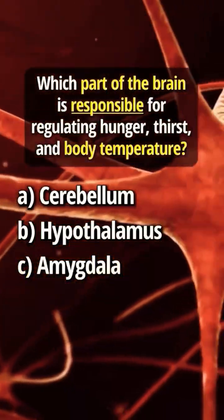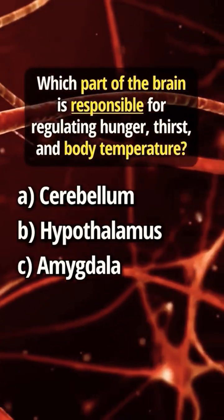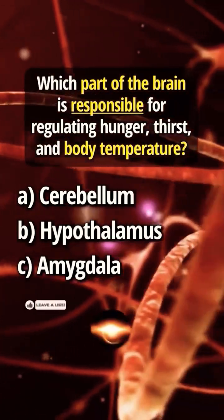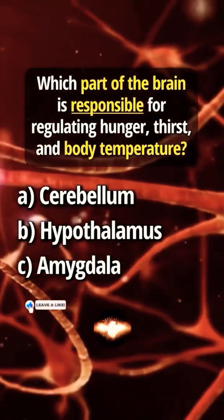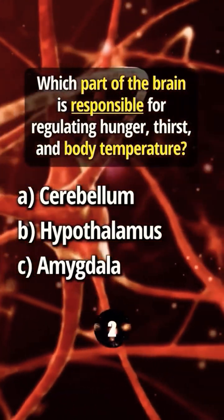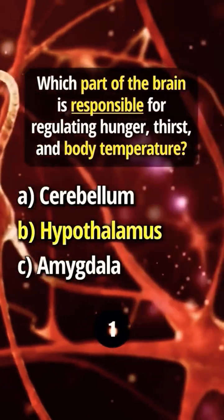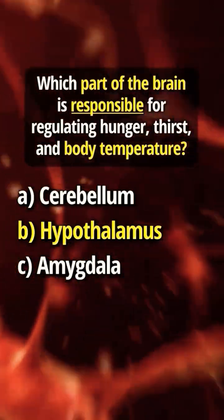Which part of the brain is responsible for regulating hunger, thirst, and body temperature? Answer: B. Hypothalamus.